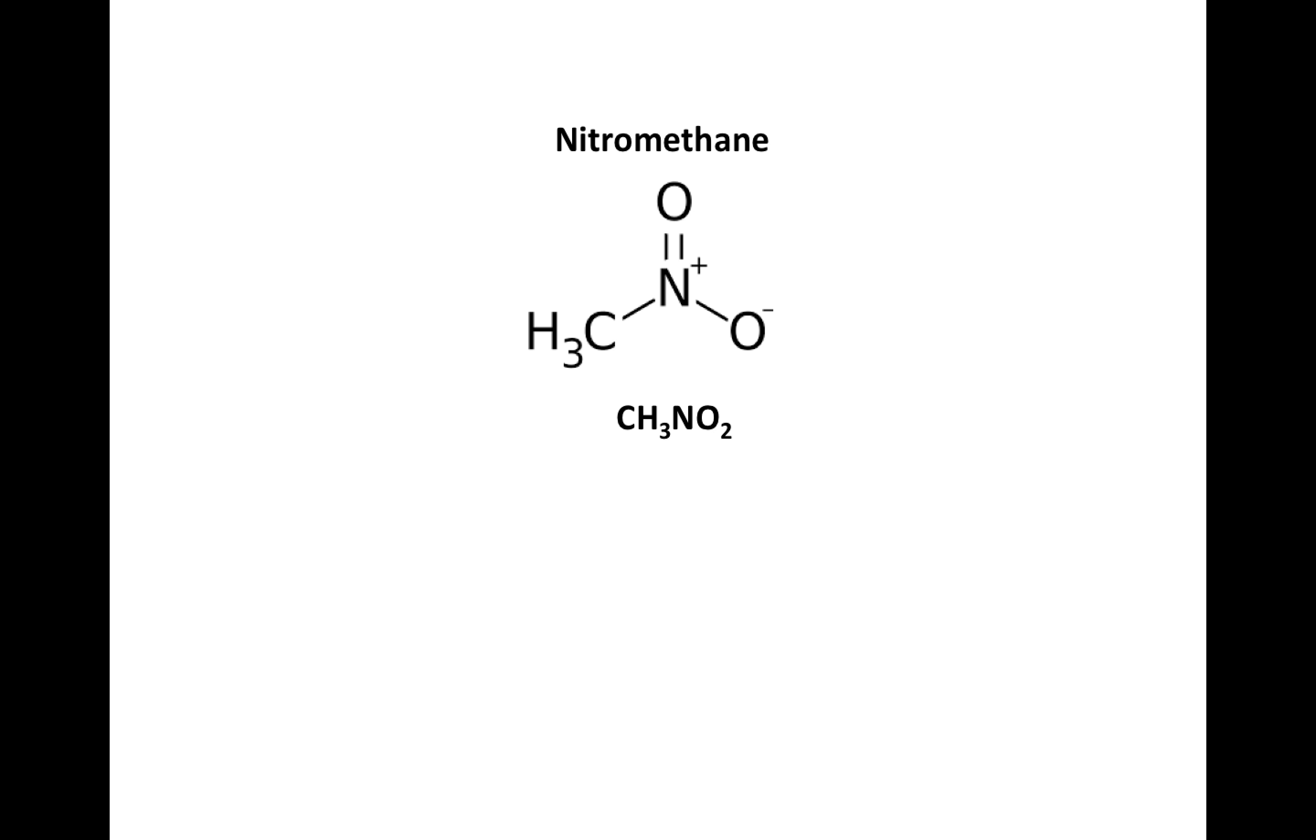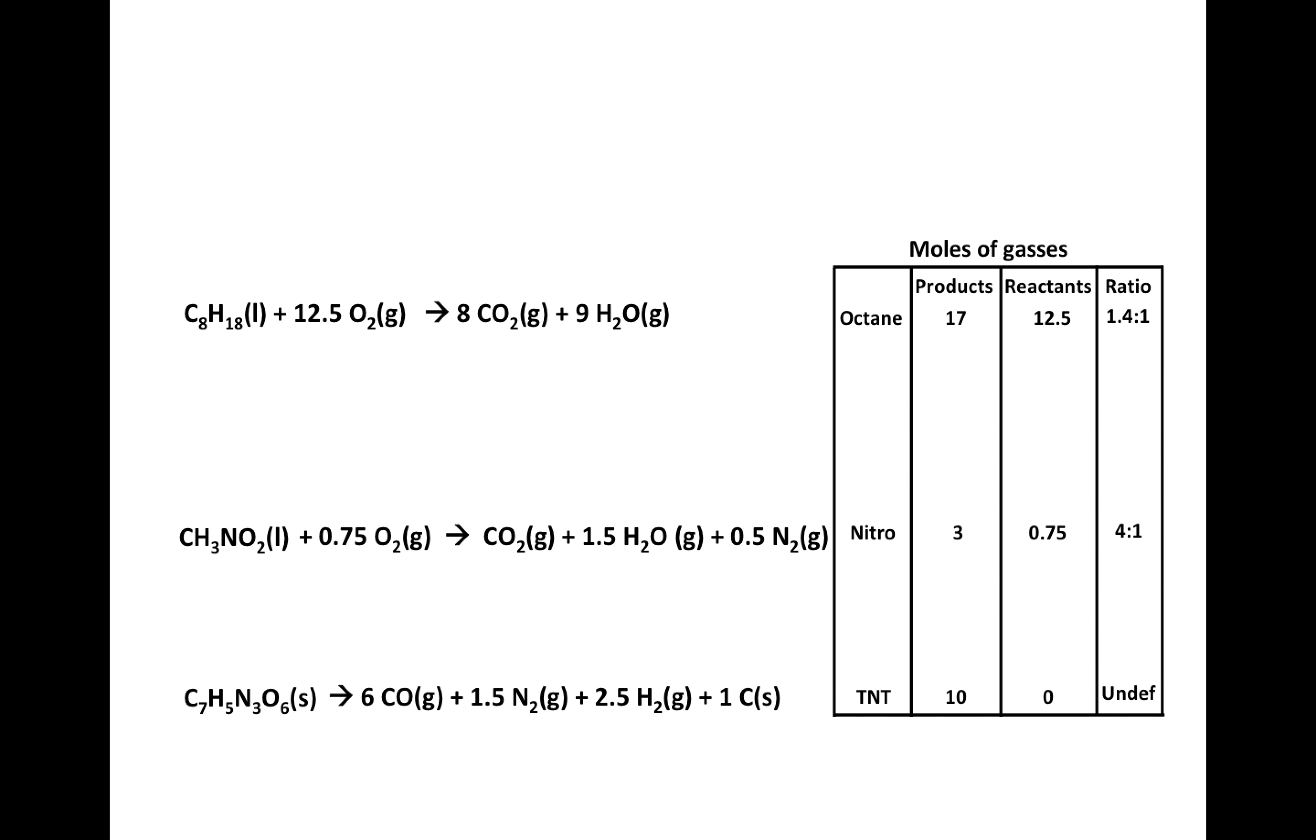This is the nitromethane molecule, this is the formula for it, and this is the equation for the combustion of nitromethane with oxygen. If I balance that I get this but I want to get rid of that 4 so I have a 1 on the left and that gives me this after I divide everything through by 4.